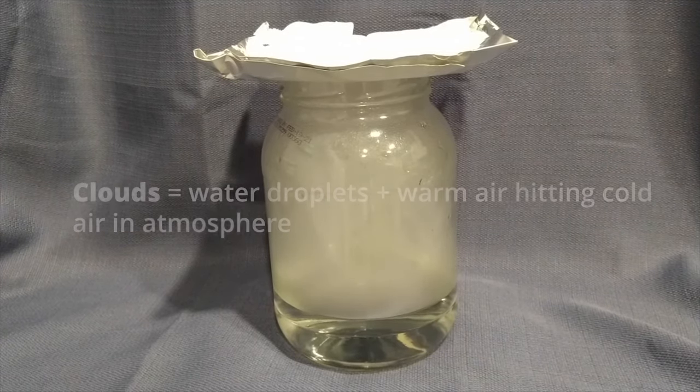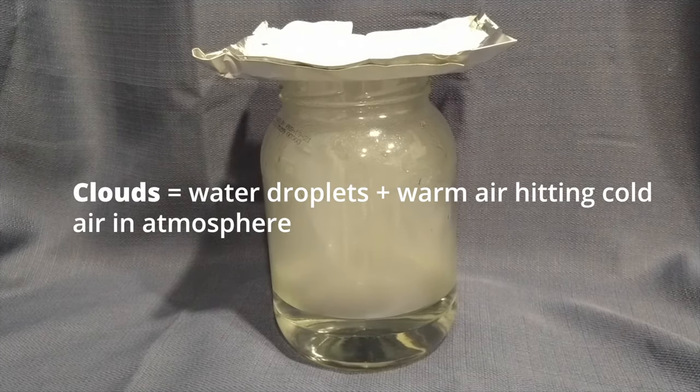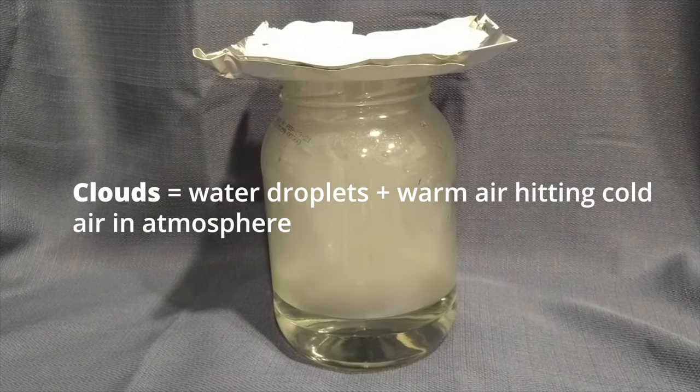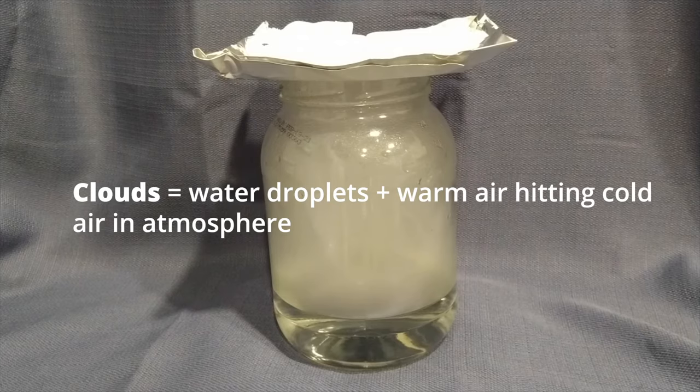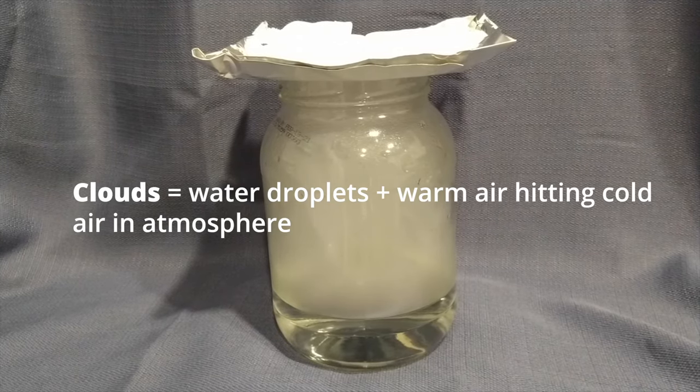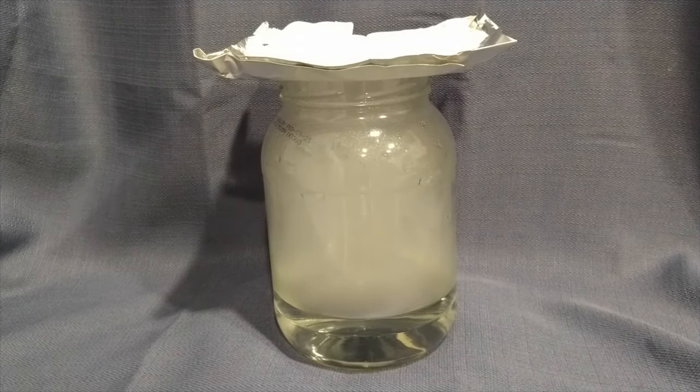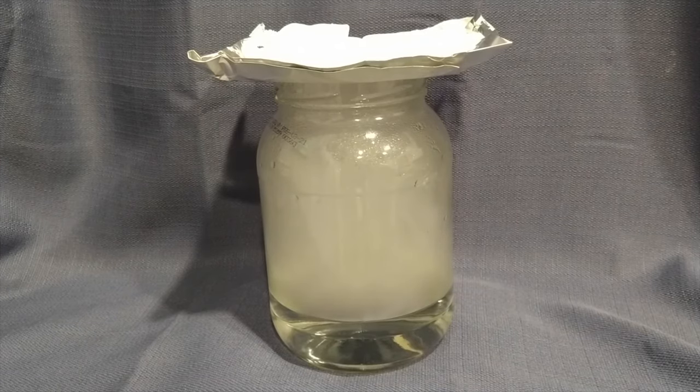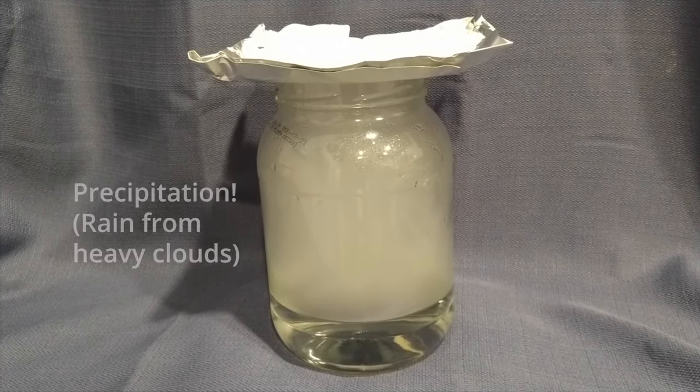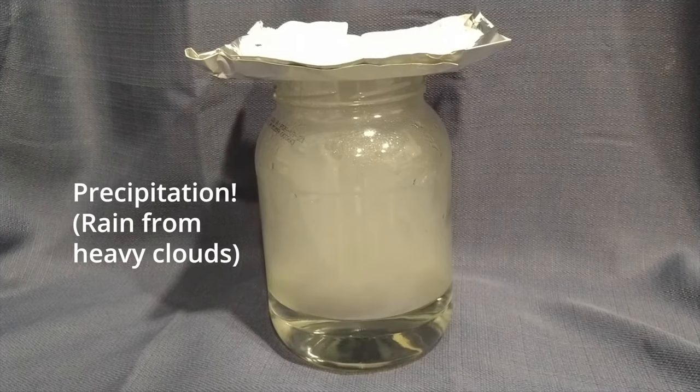Clouds are just collections of tiny water droplets formed when the warm air that's being heated by the sun, which we call evaporation, meets the cold damp air in the atmosphere. When enough water droplets form together, the cloud may get really heavy with water, and the rain will fall from the clouds. That is called precipitation.